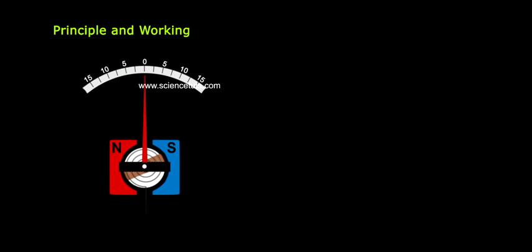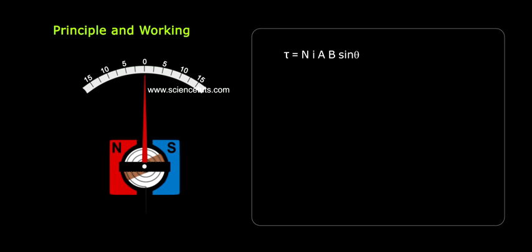Principle and working. The torque developed in the coil due to the current passing through it is given by tau equals NIAB sin theta, where N stands for number of turns in the coil.